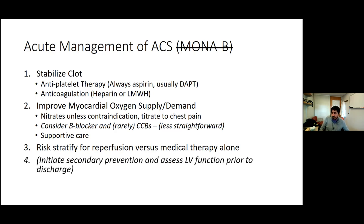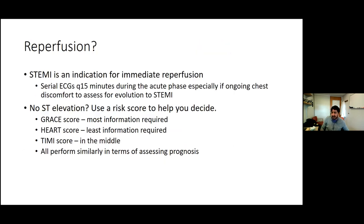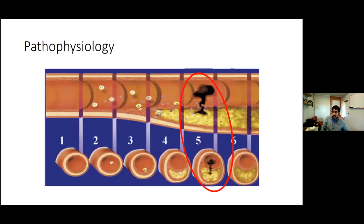Who gets reperfusion? STEMI always gets reperfusion — no questions asked. Serial ECGs are important because someone can come in with unstable angina and develop ST elevation criteria before their troponin is even positive. If there's no ST elevation, use a risk score — TIMI, GRACE, HEART — they all perform similarly. The goal is to identify who in stage five needs reperfusion before safely reaching stage six. When you put in a stent, you trade native coronary disease for stent disease; stents are prothrombotic.